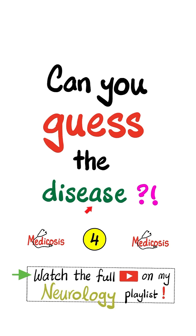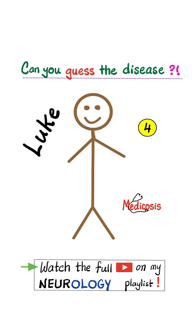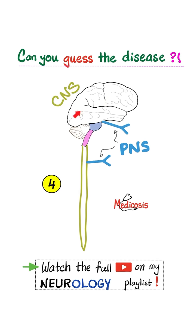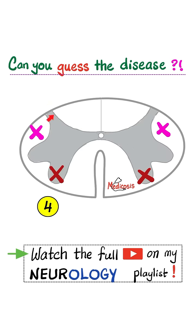Welcome to part 4 of my series: can you guess the disease? Meet Luke, an active member of the community, delighted and optimistic about life. Little did he know that he has a mutation in the gene named after superoxide dismutase. Out of the blue, his nervous system began to suffer.